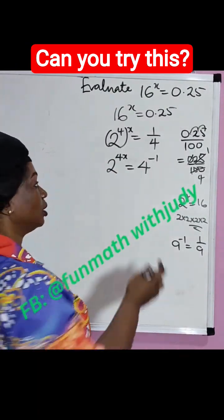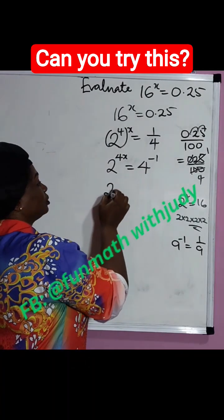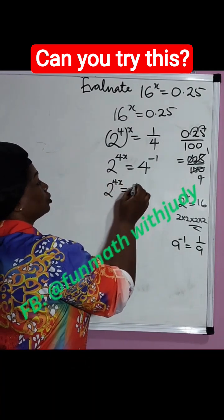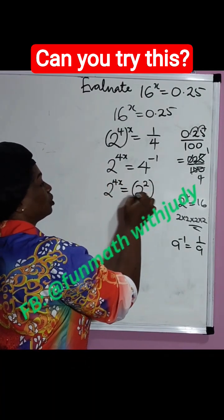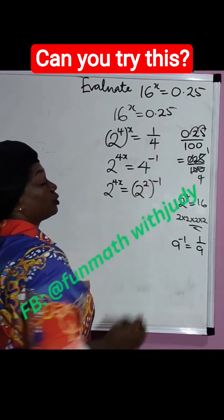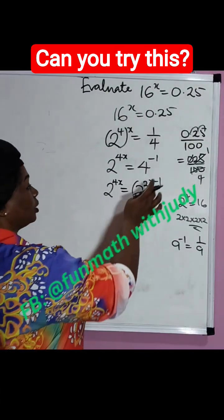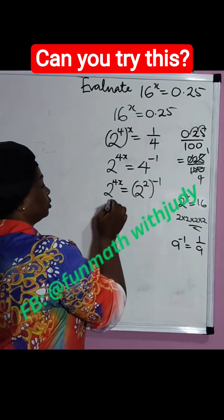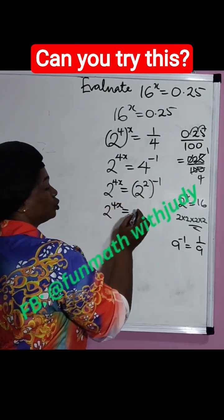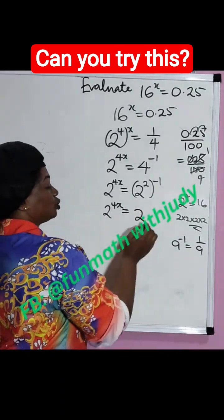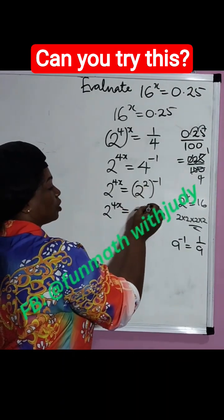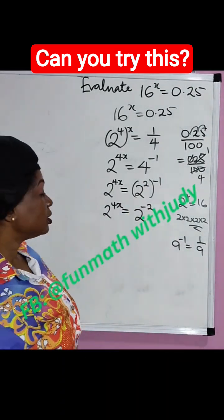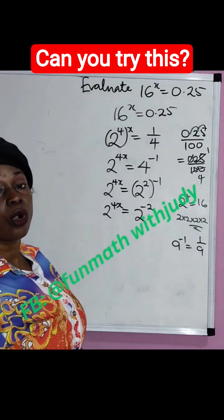Now 4 is equal to 2 raised to power 2, so we can write it as 2 raised to power 4x equal to 2 raised to power 2 times minus 1. This gives us 2 raised to power 4x equal to 2 raised to power minus 2.